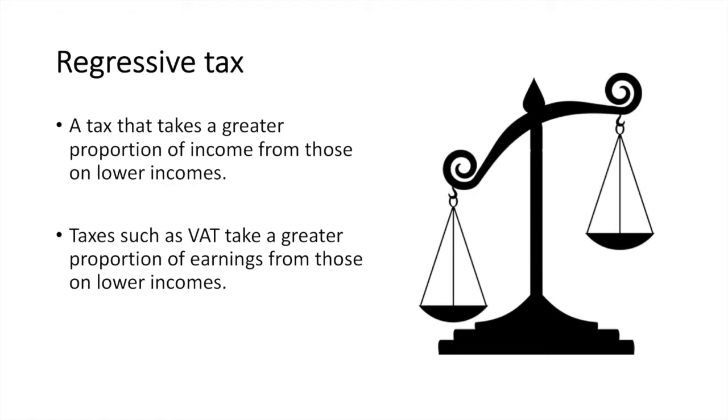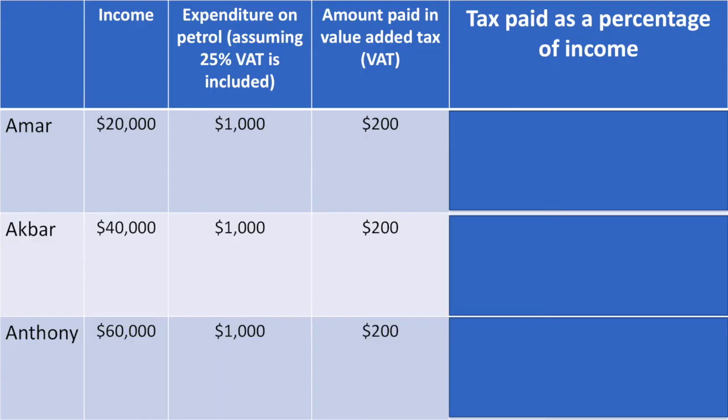To see why, let's look at an example using the case of the three brothers again. In this case, assume they all consume the same amount of petrol each week. The cost of petrol includes 25% VAT, which means $800 is the cost of petrol and $200 is the tax. Each brother pays the same $200 in VAT.